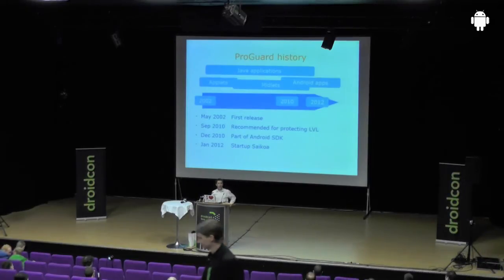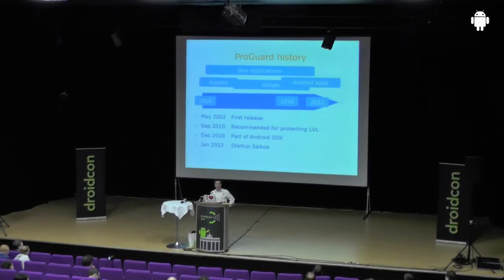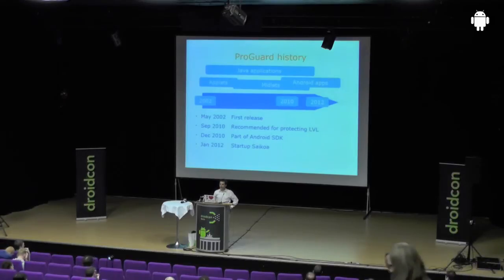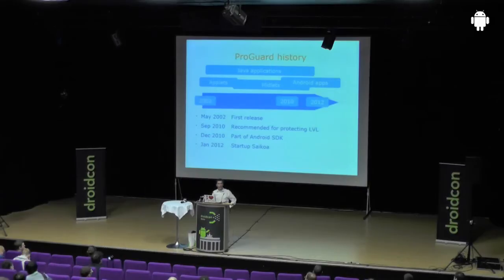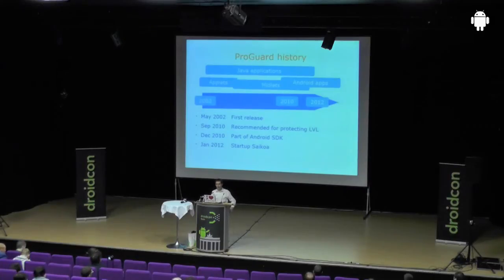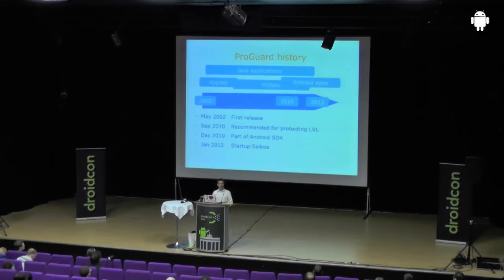Over time ProGuard grew gradually. I worked on it diligently day and night and on weekends. It was being picked up early on when Android apps came along. But it really took off for Android development when Google introduced the license verification library, and only a week or two after that someone already posted how you could circumvent it quite easily. So Google recommended using an obfuscator like ProGuard to make that a little bit harder, and then a couple of months later they included it as part of the Android SDK.